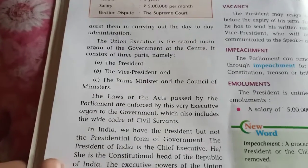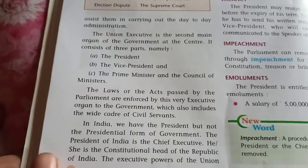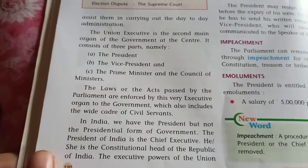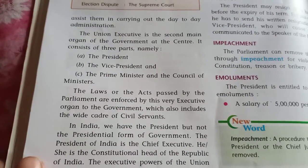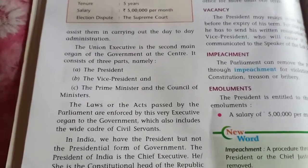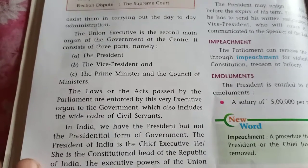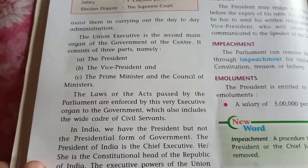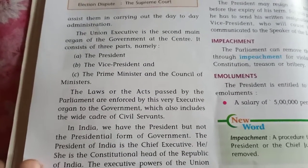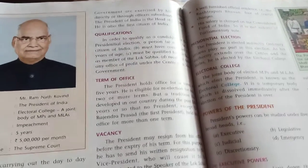We have a president, but we do not have a presidential form of government. The President of India — there are certain short questions that may come, such as: who is the chief executive, who is the constitutional head of the Republic of India, who is the head of the state, or who is the first citizen of India. The answer to all these questions is: the president. Executive powers of the union government are exercised by the president directly or through officers subordinate to him.